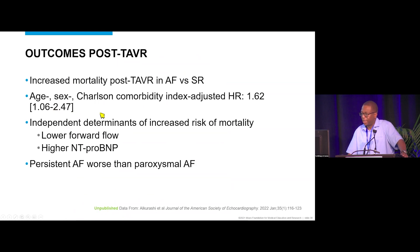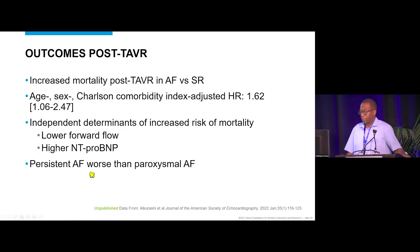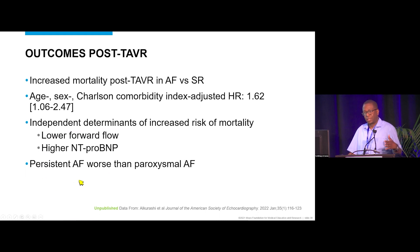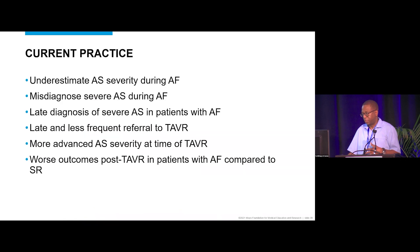The independent determinants of increased mortality were lower forward flow and higher NT-proBNP in patients with atrial fibrillation. Outcomes in persistent atrial fibrillation were worse than in paroxysmal atrial fibrillation — consistent with multiple other studies showing worse outcomes in AFib versus sinus rhythm.